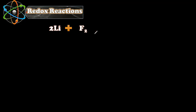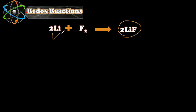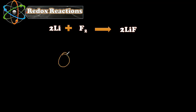In this chemical reaction we have two lithium plus fluorine F2 gives us lithium fluoride. This represents bonding between lithium and fluorine to produce lithium fluoride. Lithium has one valence electron and fluorine has seven valence electrons.